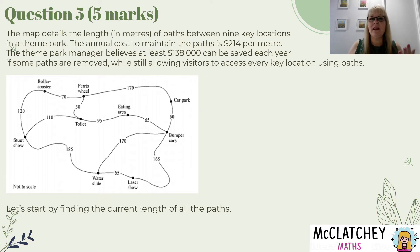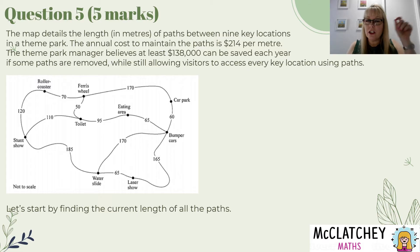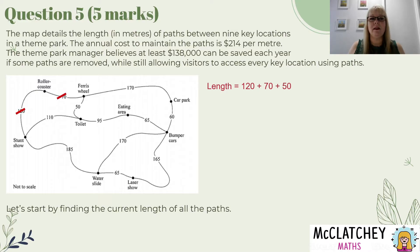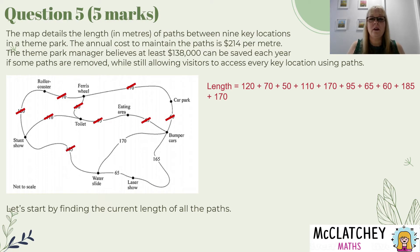We're going to start by finding the current length of all paths. As I add these up — because you can see there's a lot of numbers here — I want to make sure I haven't missed anything. So I'm just going to put a little dash across the path once I've covered it off. Starting across the top: 120, 70 to the roller coaster, 50 down to the ferris wheel, 110 to the stunt show, and so on all the way across until I've crossed out all of the different options.